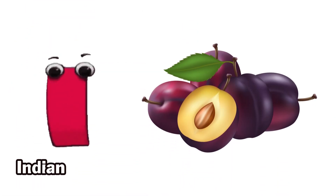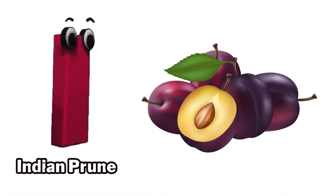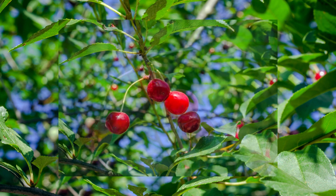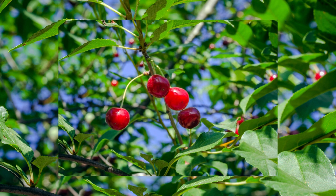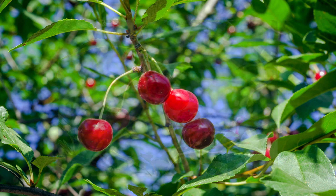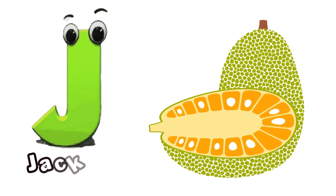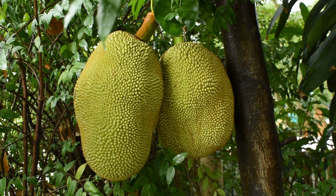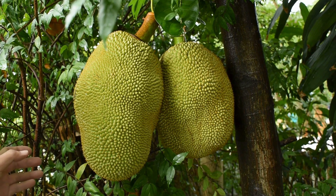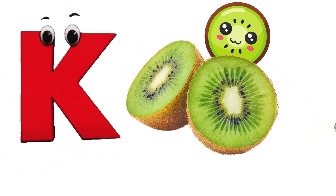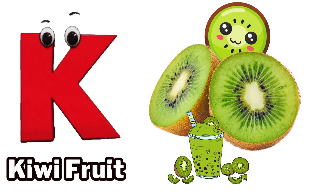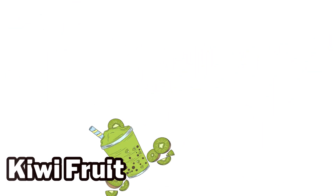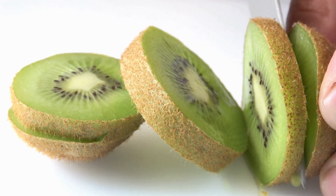I is for Indian fruit, d-dian fruit. J is for jackfruit, j-j-jackfruit. K is for kiwifruit, k-k-kiwifruit.